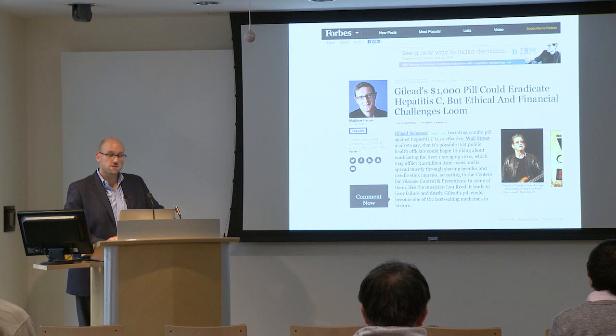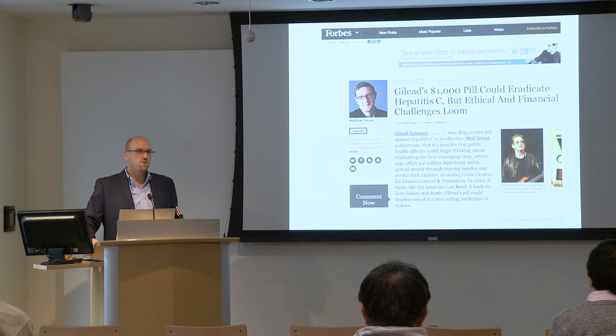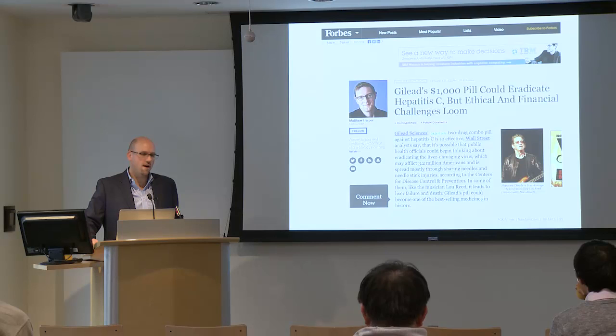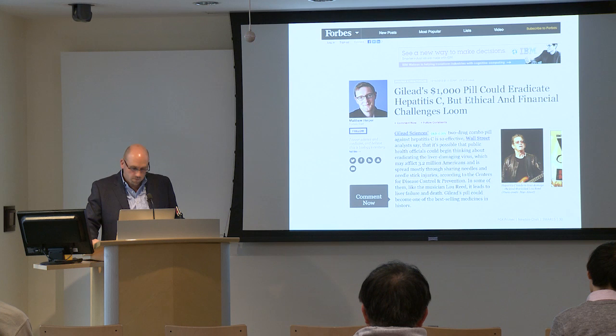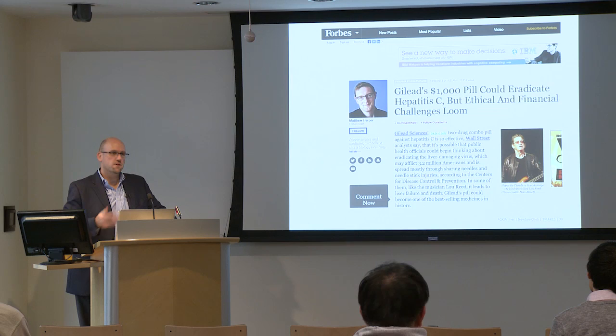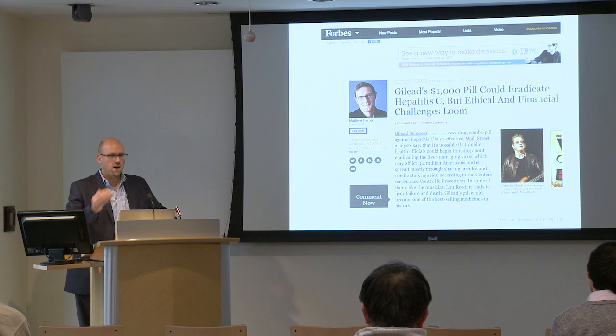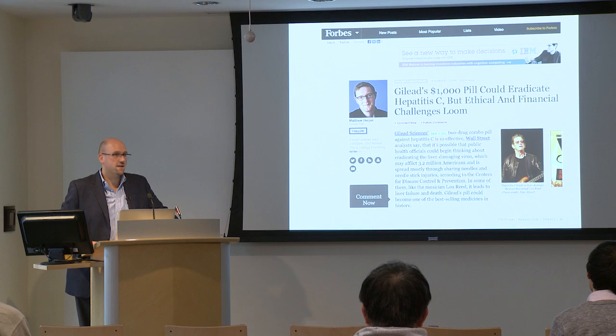This is a general theme: our use of therapies changes over time. While penicillin is still used, most therapies are ultimately supplanted by therapies that work much better as we come to understand how they act. One of the challenges of doing pharmacogenetic studies is that we're constantly abandoning older therapies and acquiring newer ones — this requires some infrastructure to efficiently identify pharmacogenetic effects, or they'll never be very relevant because we're constantly playing catch-up.